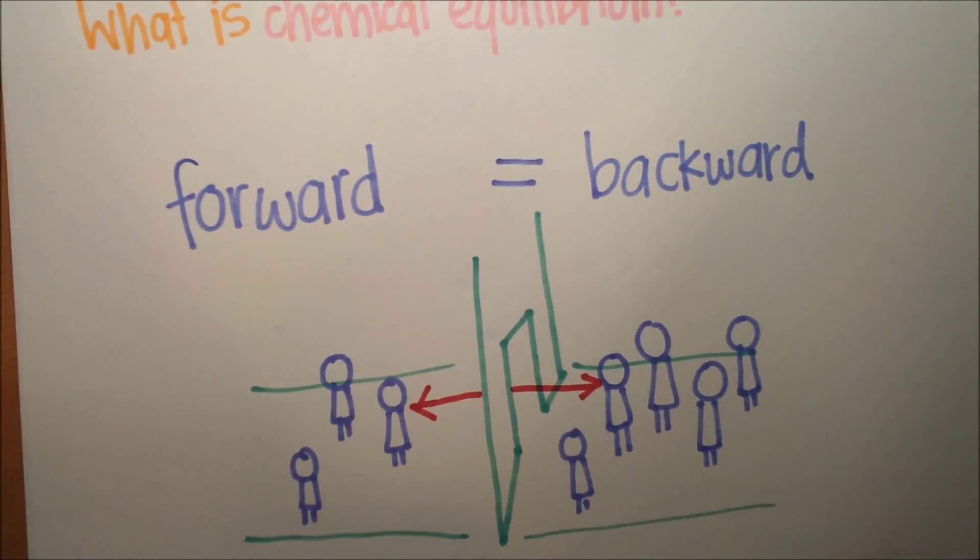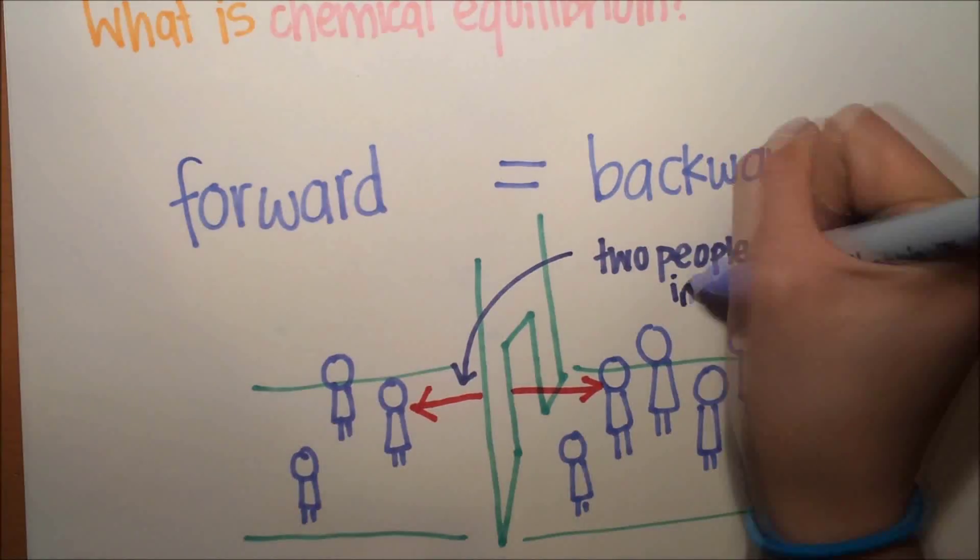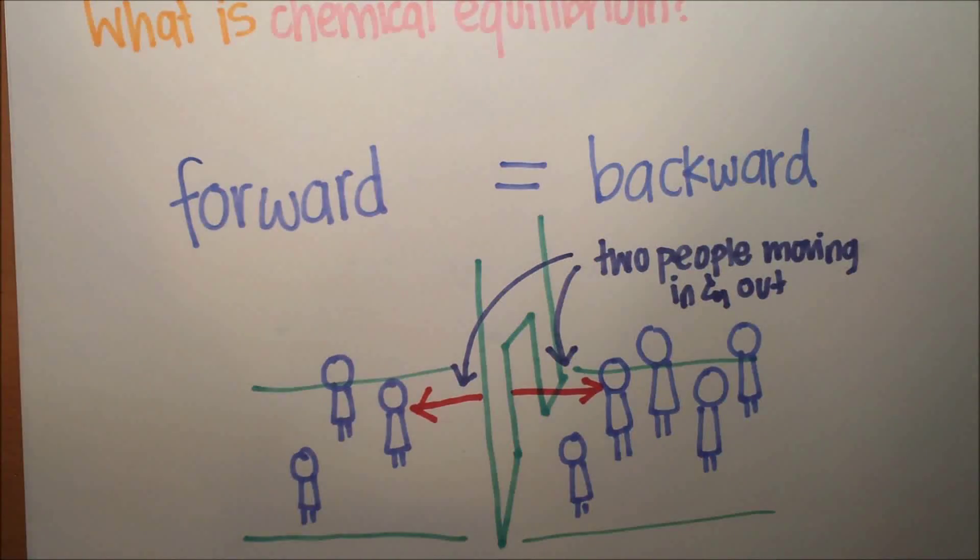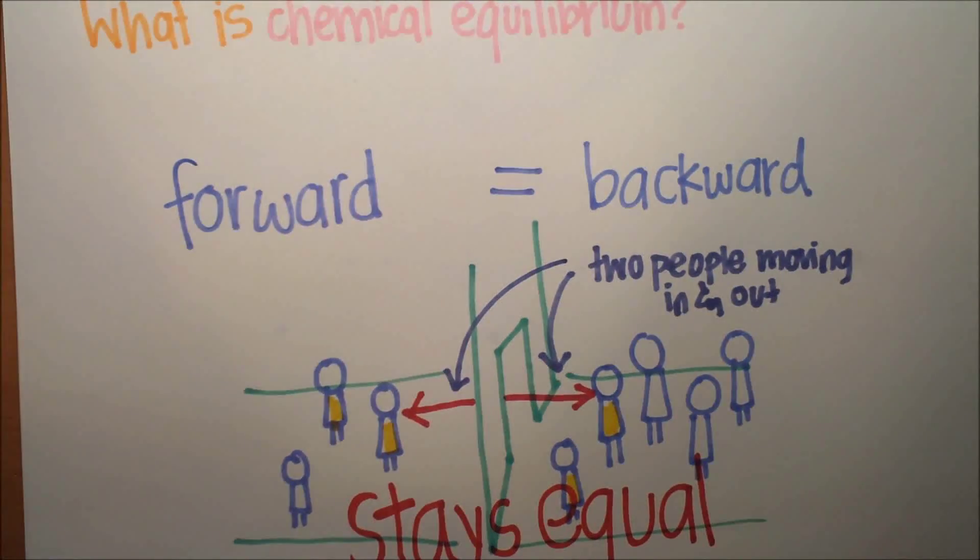Now, let's say that there are two people constantly moving from the right room to the left room, and two people also constantly moving from the left room to the right room. And though these people are constantly moving between the rooms, the amount of people in each room stays the same.